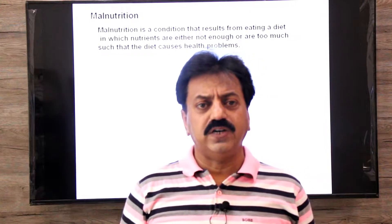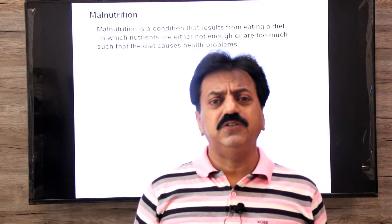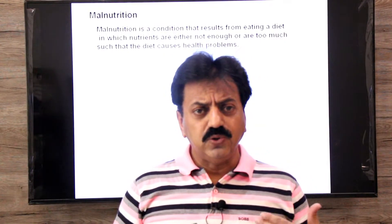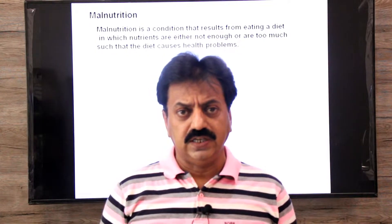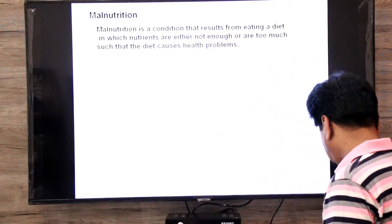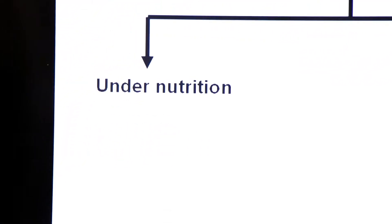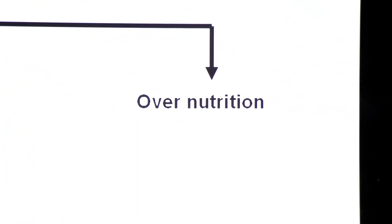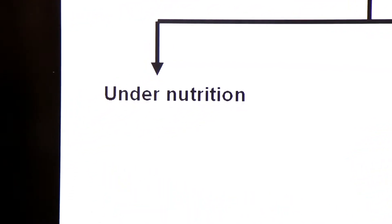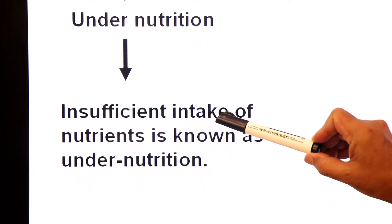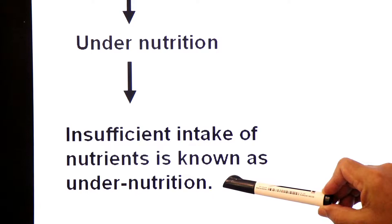Malnutrition has two categories: under-nutrition and over-nutrition. When there is a deficiency of nutrients in the diet, it is called under-nutrition, and when too many nutrients are consumed, it is called over-nutrition. Both can cause health problems. There are two categories of malnutrition: one is known as under-nutrition and the other is known as over-nutrition. Insufficient intake of nutrients is known as under-nutrition — it means the deficiency of nutrients is known as under-nutrition.